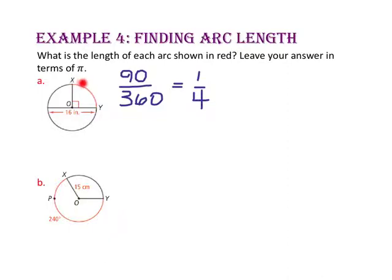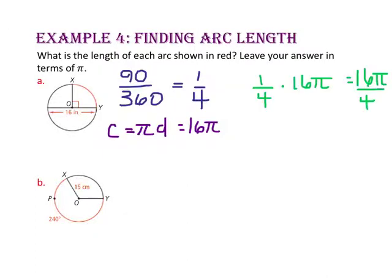So the length of arc XY will be one fourth of the entire circumference of the circle. Now let's find the circumference. We know that the circumference will be pi times the diameter, so 16 pi. Since the length of arc XY will be one fourth of the entire circumference 16 pi, we will take one fourth of 16 pi. 16 pi divided by 4 gives us an arc length of 4 pi.